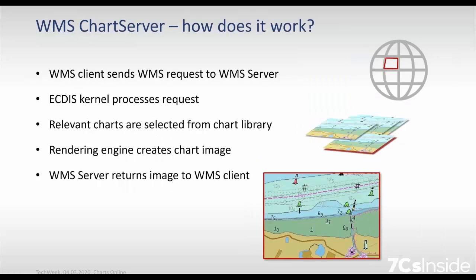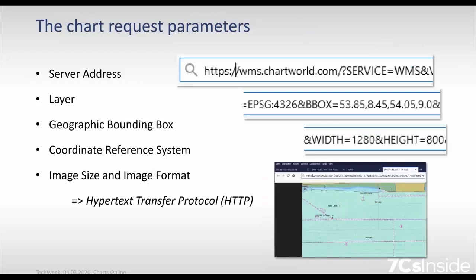How does the chart server work? First of all, the WMS client sends a request to the server. Then the ACTUS kernel processes the request and the relevant charts are selected from the chart library. The rendering engine creates a chart image and then the WMS server returns the image to the client that initially sent the request. Let's have a look into this request, which consists of several parameters. I'd like to hand over to my colleague Eric.